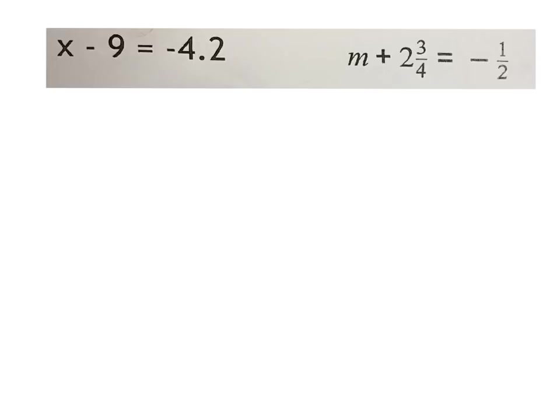x minus 9 equals negative 4 and 2 tenths. I am going to keep myself organized by drawing my line down the middle here so I can keep my two sides balanced. My goal is to isolate my variable so that I can end up with x equals something.